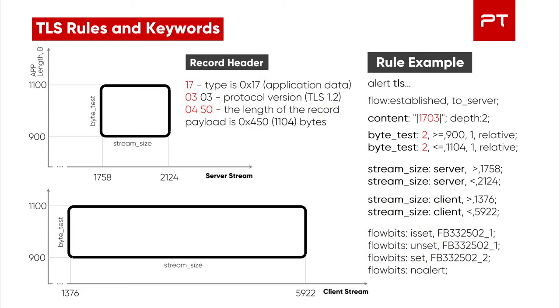Let's see which keywords we will need for the TLS detection rules. TLS detection rules include content, byte_test, and stream_size keywords. We use content to find the application data record and not records of any other type — this is byte 0x17, while 0x03 is the most significant byte of the TLS version. The next two bytes are the fragment length. We use the byte_test keyword to match the required range of fragment length. For example, if we inspect a packet and see the value 0x1703, while the fragment size is between 900 and 1104 bytes, and this fragment fits in the appropriate range of client and server streams, then the rule will trigger and set a flow bit.